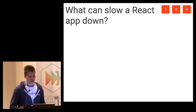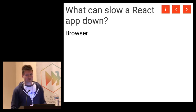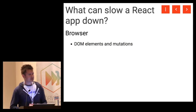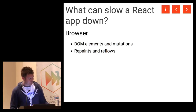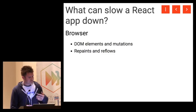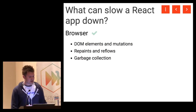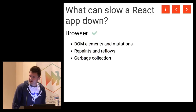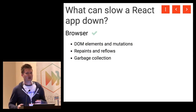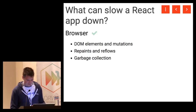Within a React application, there are two high-level areas that cause slowness. One is the browser itself — creating a lot of DOM elements or doing a lot of DOM mutations can cause slowness. Triggering a lot of repaints or reflows, especially during performance-sensitive parts like scrolling, can also cause slowness. And garbage collection — if we create a lot of objects and then throw them away, the browser has to clean them up at some point, and it may do so at an inconvenient time for your application.